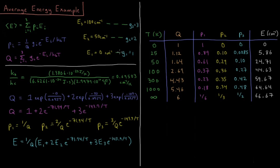So we have one at zero wave numbers with a singly degenerate system, we have a doubly degenerate energy level at 50 wave numbers, and we have a triply degenerate energy level at 100 wave numbers.